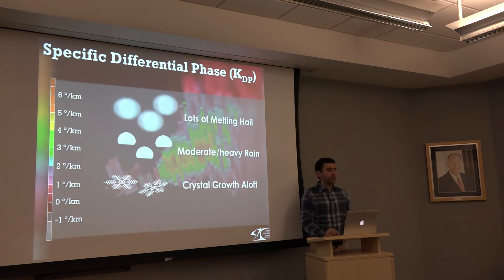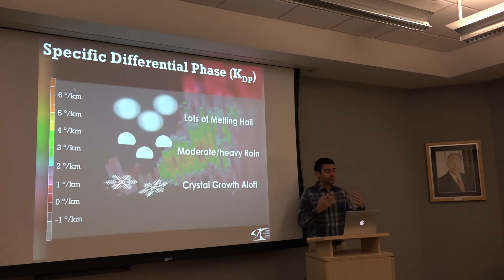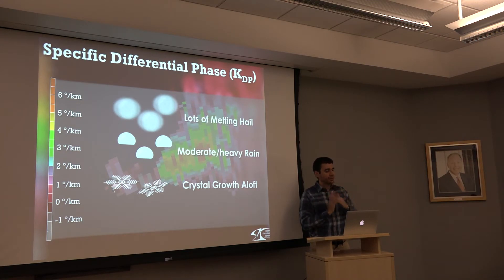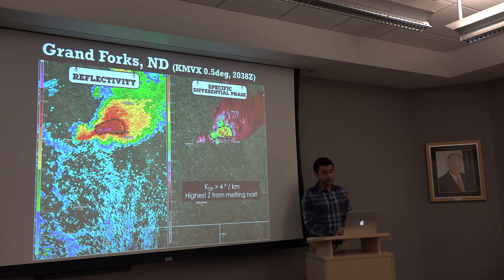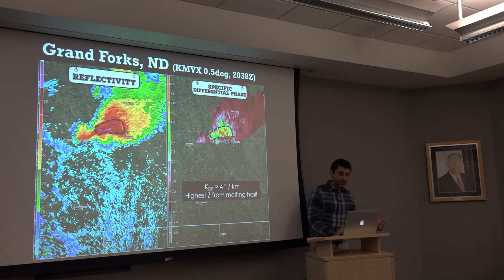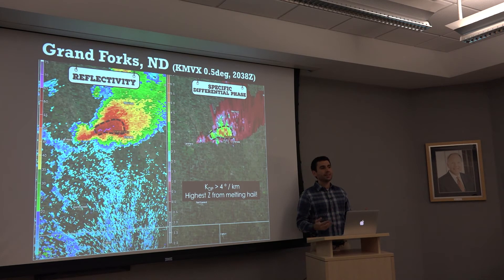Now we introduce specific differential phase (KDP): higher values in degrees per kilometer indicate the horizontal wave is lagging more behind the vertical, meaning a lot of liquid water or melting hail; values closer to zero mean the waves are tracking together. Looking at our cell, we highlight an area of high reflectivity where KDP values are over 4 degrees per kilometer. Really high KDP tells us there's a lot of liquid water and melting hail — meaning that high reflectivity is driven by lots of melting hail, not necessarily gigantic dry hailstones.